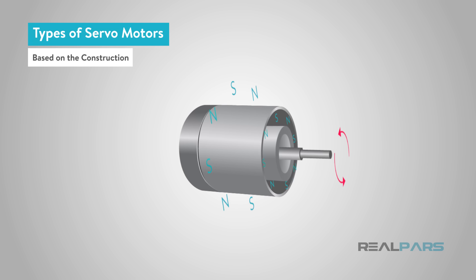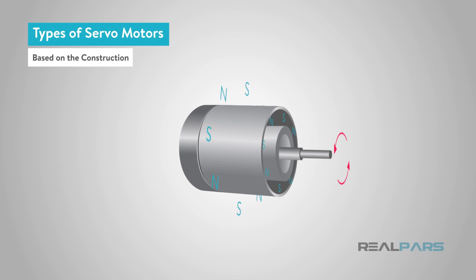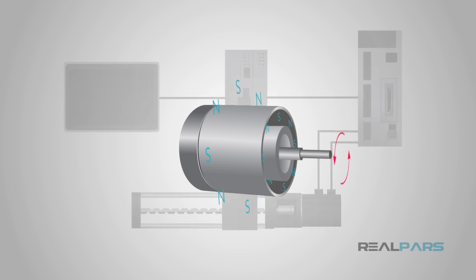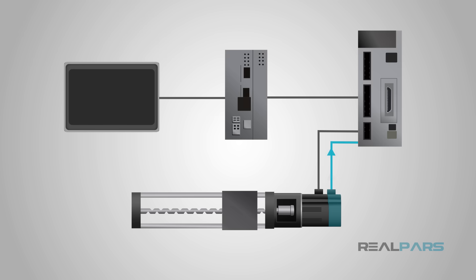The rotor consists of a permanent magnet, so no rotor current is required. When the stator field de-energizes and stops, the rotor also stops. These motors have higher efficiency due to the absence of rotor current. When the position of the rotor with respect to the stator is required, an encoder is placed on the rotor and provides feedback to the servomotor controller.